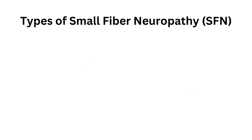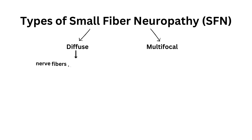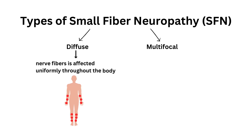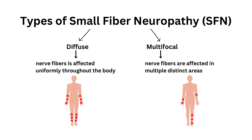Small Fiber Neuropathy is diffuse or multifocal. In a diffuse pattern, the nerve fibers are affected uniformly throughout the body. In a multifocal pattern, the nerve fibers are affected in multiple distinct areas rather than uniformly.